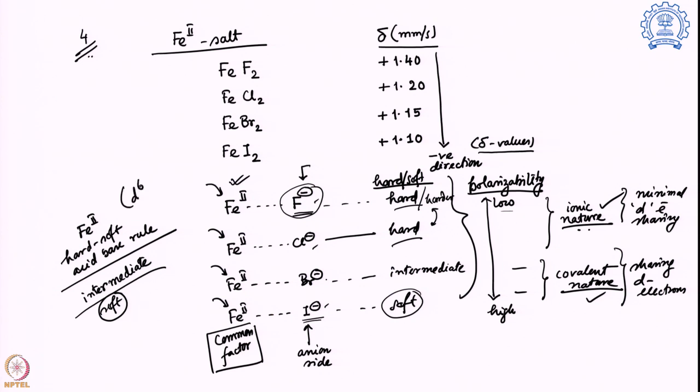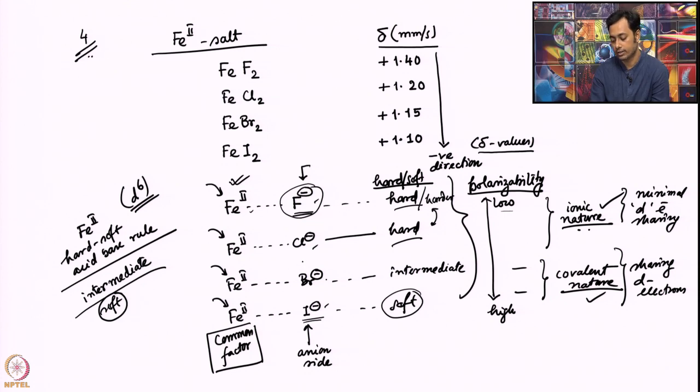In covalent nature d electrons will be shared and over here it is minimal sharing because all of them are iron plus 2. It is having 6 d electrons to start with. All the 6 electrons more or less remain as it is for the case of iron fluoride and iron chloride. But iron bromide and iodide, it is going to be sharing the electron density with the anions bromides or iodide. When it starts sharing, if I lose d electron density it will be lowering the d electron density, it will lower the shielding effect.